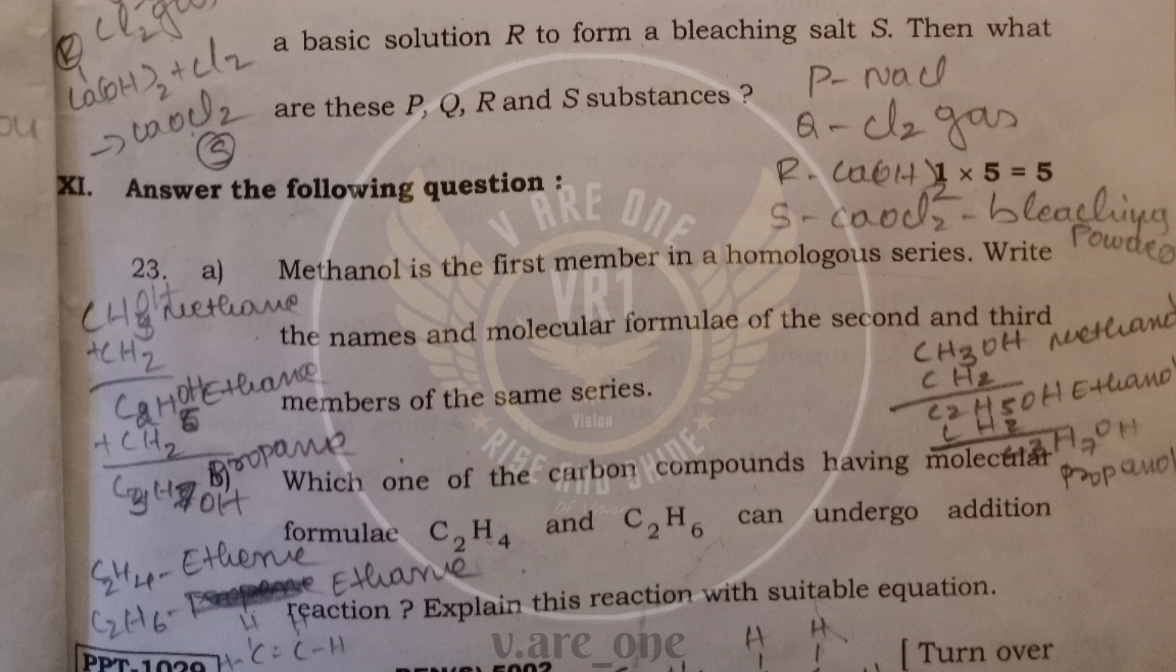23rd question, methanol is the first member. So, then you have to add CH2 group for the methanol. You will get ethanol, C2H5OH. Then you have to add CH2 for the ethanol. And you will get propanol, C3H7OH. And 3 members of the series. And B question, C2H4, it is ethene. And C2H6 is ethane. So, when you add the hydrogen to ethene, ethene will get converted into ethane. So, unsaturated to saturated carbon compound.